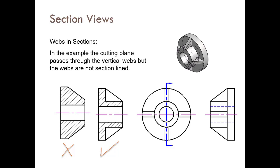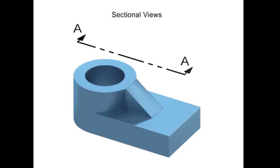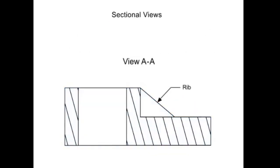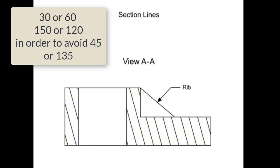For webs and ribs in section: if you have a rib or web, you do not add section view lines inside them when the cutting plane passes through. Keep the rib area empty without section lines. Also, adjust the section line angle to 30 or 60 degrees when needed to avoid the standard 45-degree conflict.